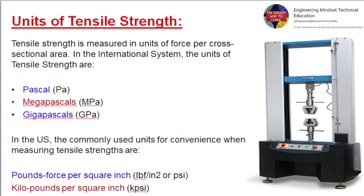Units of tensile strength: Tensile strength is measured in units of force per cross-sectional area. In the international system, the units are pascals, megapascals, and gigapascals. In the US, the commonly used units are pounds-force per inch² (psi) and kilopounds per inch² (ksi).